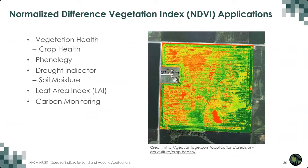NDVI specifically is one of the most widely used vegetation indices in the world, used to assess the state of vegetation over many different spatial and temporal resolutions. Vegetation health is generally a measure of the amount of reflected near-infrared light, with healthier vegetation reflecting more near-infrared than unhealthy vegetation. NDVI can be used to monitor crop health, phenology, as a drought indicator, to understand leaf area index, and even for carbon monitoring.